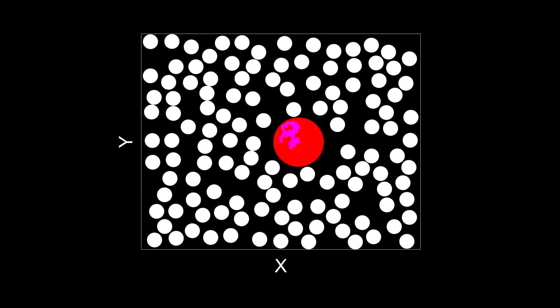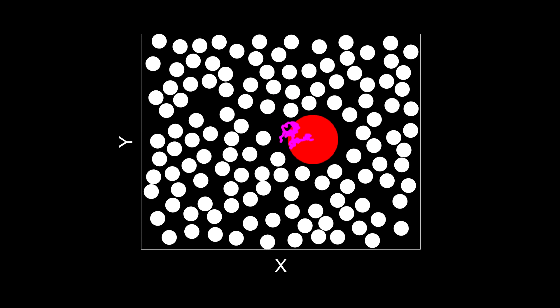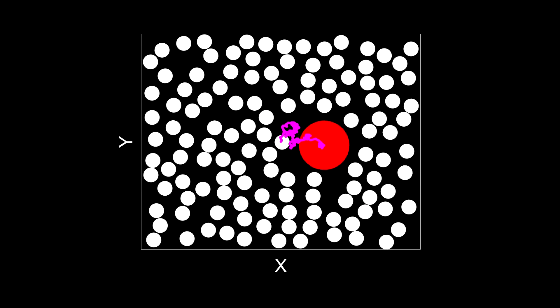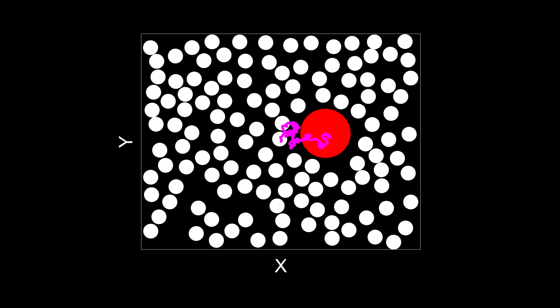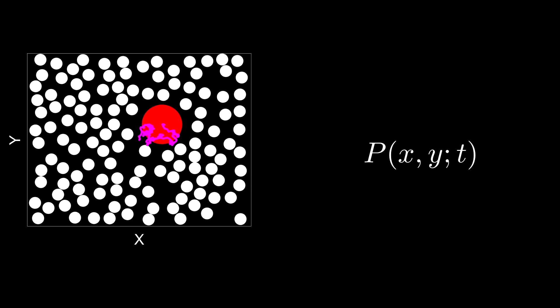Hence, instead of focusing on what the red particle is doing, we want to understand how the probability to find it at a certain position, x y, changes in time.